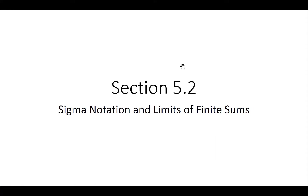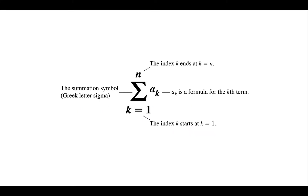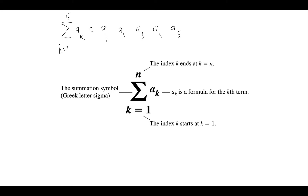Section 5.2: sigma notation and limits of finite sums. This symbol is called sigma notation. The starting value is k equal 1 up to k equal n, and the formula gives the kth term. For example, if k starts from 1 to 5 of a_k, the meaning is there are five terms a1, a2, a3, a4, and a5 — replacing k from 1 to 5 and adding them. Sigma notation means summation: the sum of all these terms.